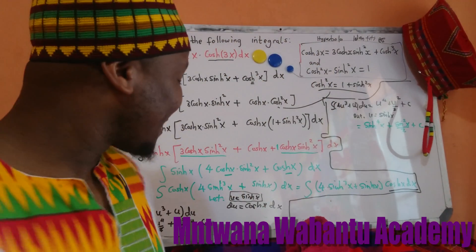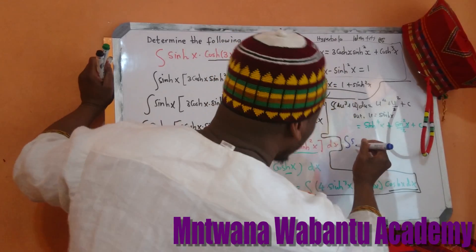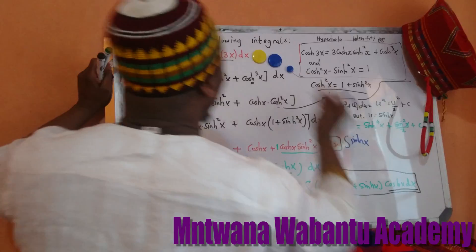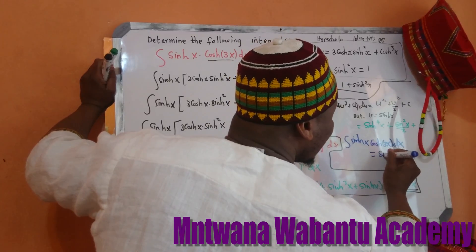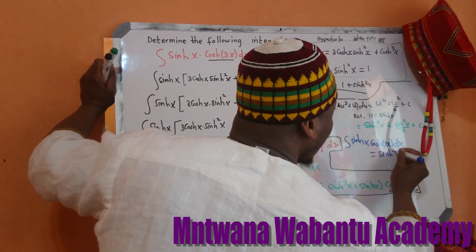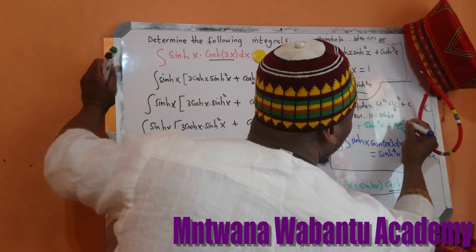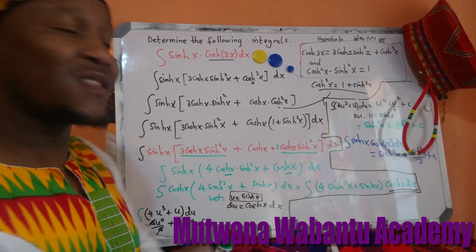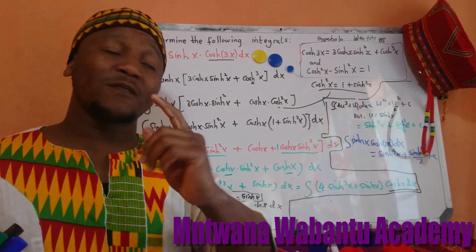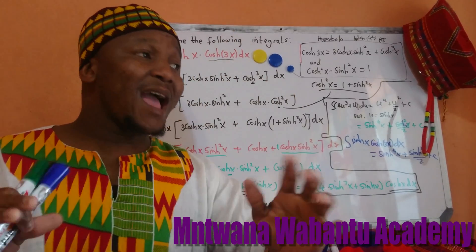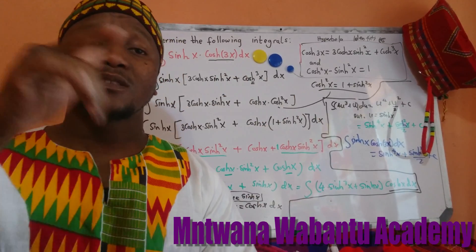So when you integrate sinh(x)·cosh(3x) dx, you get sinh⁴(x) plus sinh²(x) over 2 plus constant. That's it for this one. If you found this helpful, make sure to subscribe, like, and share. Leave a comment and I'll get back to you. Thanks a lot, love you guys!